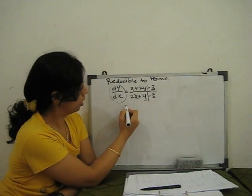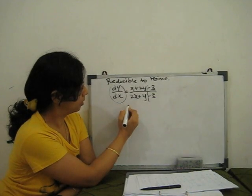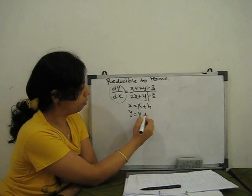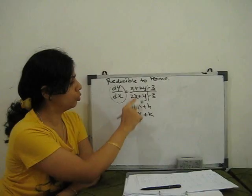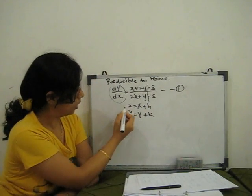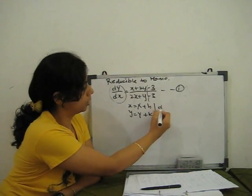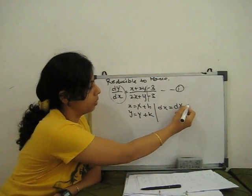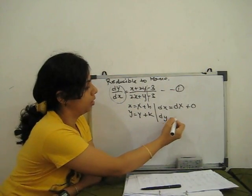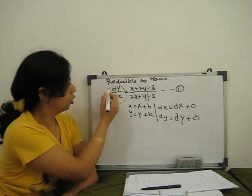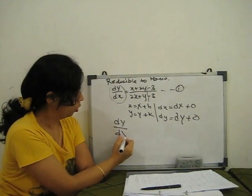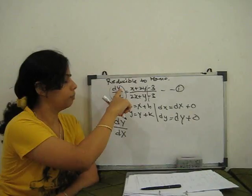For this, the substitution is x = X + h and y = Y + k. When we substitute this in equation number 1, we find dx = dX (since h and k are constants, their differentials are 0). Similarly dy = dY, so dy/dx = dY/dX. Remember: when you substitute, write capital letters in place of small letters.